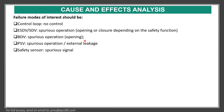In cause and effect analysis, failures of interest should cover control loops with no control, ESV and shutdown valve spurious operation — opening or closure depending on safety function — BDV spurious operation opening because it is fail-open, PSV spurious operation external leakage, and safety sensor spurious signals.